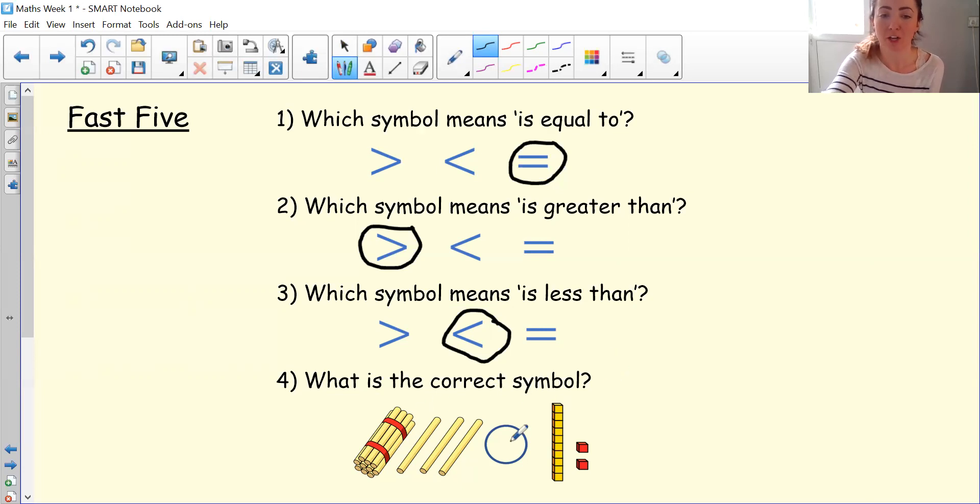Finally, what is the correct symbol to go in this circle? First we need to work out what each picture represents. I know that this bundle of 10 represents 10, and then there's one, two, three ones. One ten and three ones. 13. Let's check that by counting on. 10, 11, 12, 13.